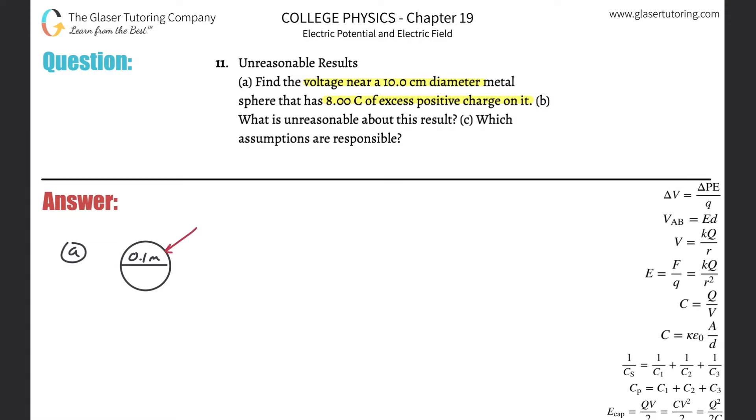Pretend we zoomed out of this. If we zoomed out of it, wouldn't it look just like a single point? And we would say that point has a charge of 8 coulombs. So basically this sphere is essentially considered a point charge.